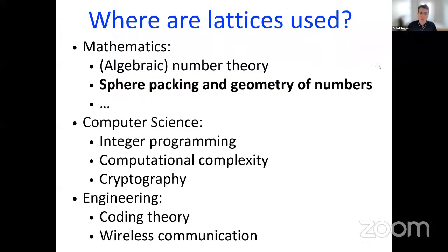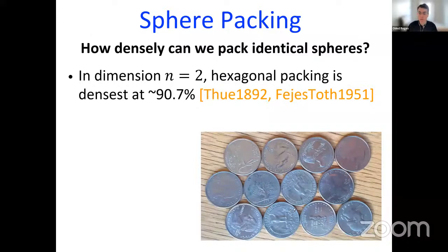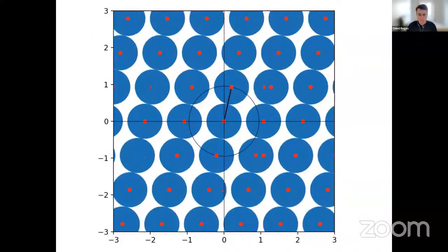The focus of today is mainly from the perspective of geometry of numbers — sphere packing, trying to understand geometrical properties of lattices. One of the perhaps most well-known questions is that of sphere packing: how densely can we pack identical spheres in n-dimensional space? In dimension two, the answer is well-known — it's simply the hexagonal packing, which I'm showing here using quarters on my floor. This packing packs 90.7 percent of space. This was first shown by Thue in 1892 and more rigorously by Fejes Tóth in 1951.